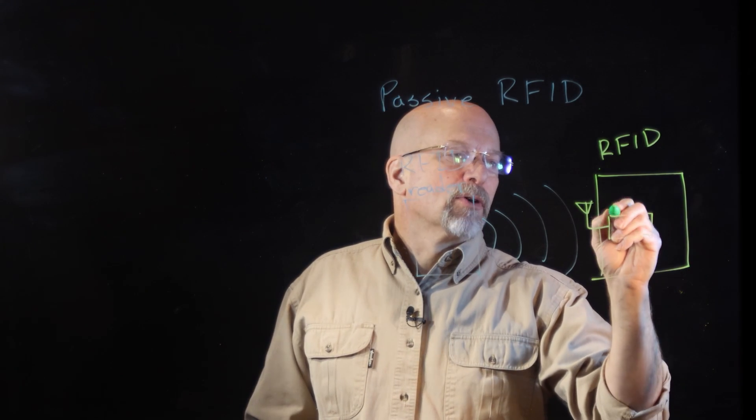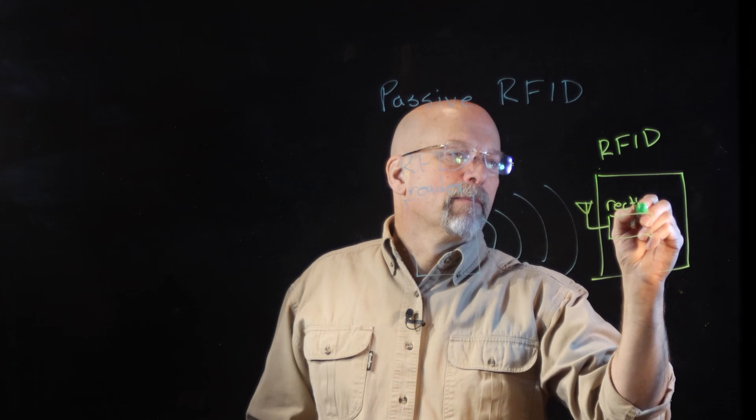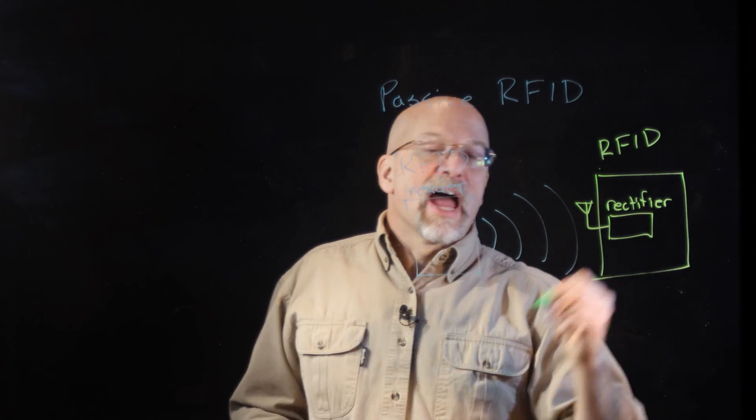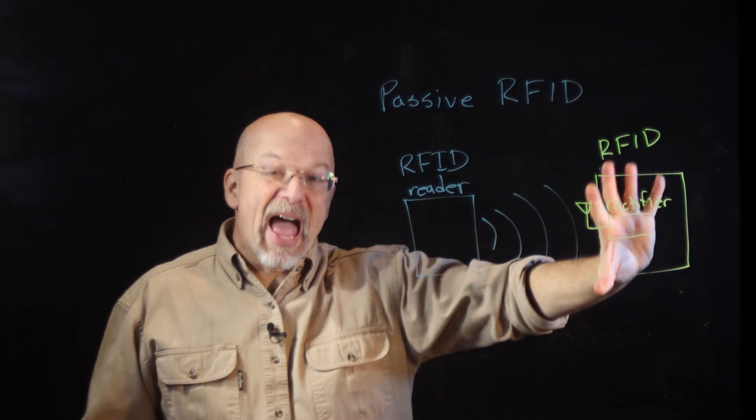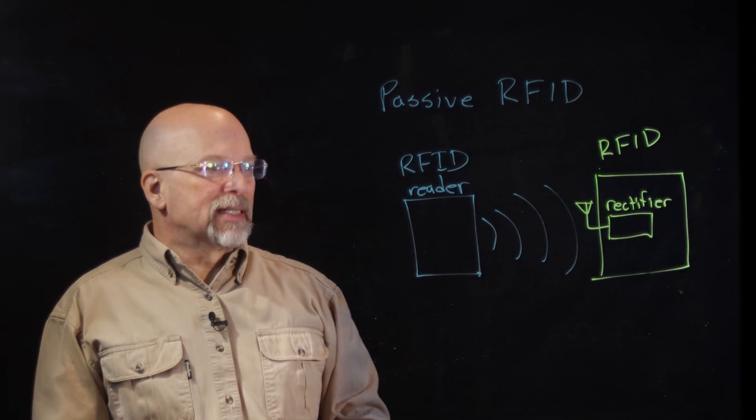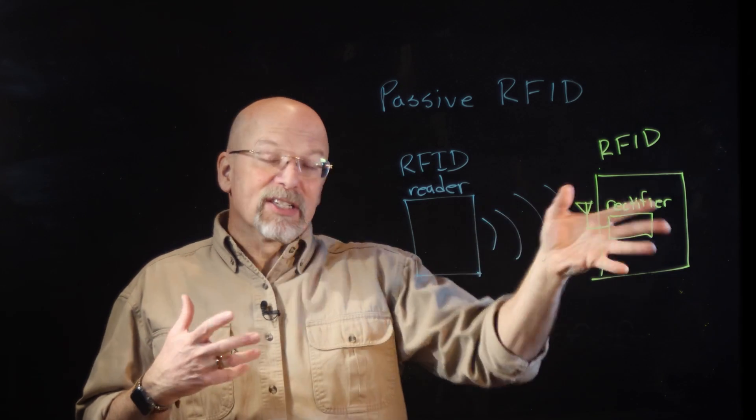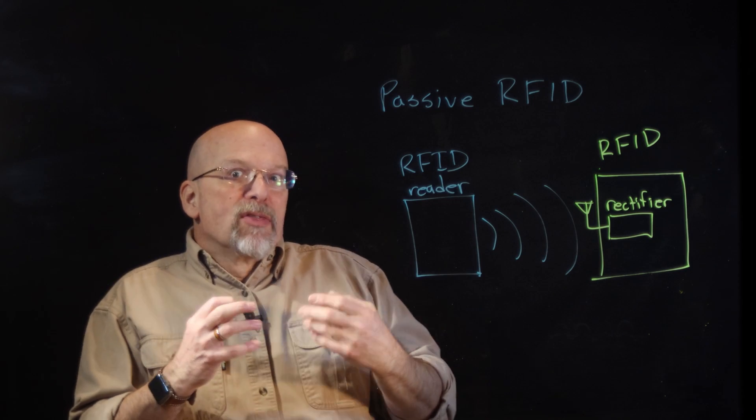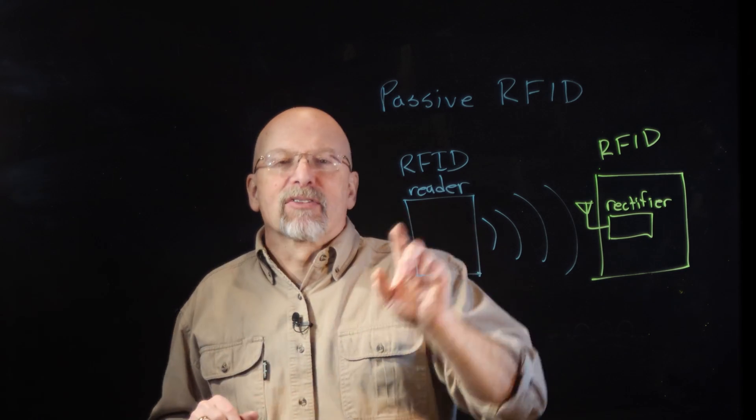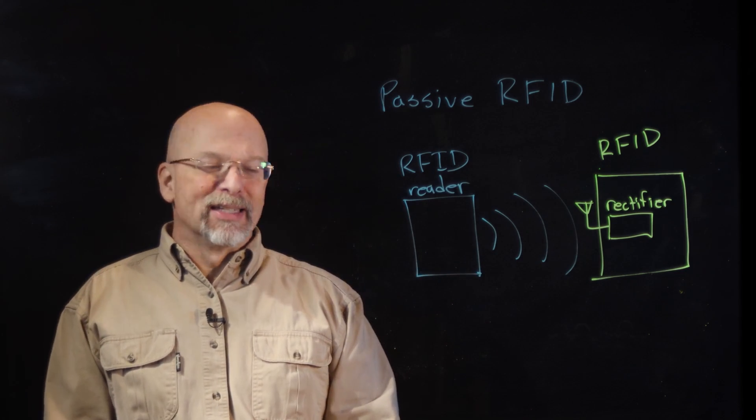And that rectifier generates voltage. So we don't have to have a battery or anything in that RFID tag, we just simply receive these electromagnetic waves, generate our own electricity, so that we can then send a pattern back that can be read by the RFID reader.